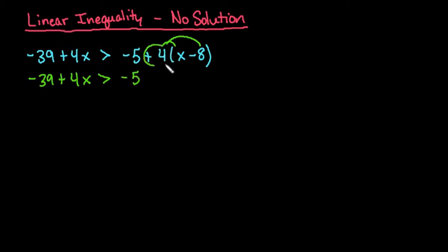So we would just distribute this positive four into the x and the negative eight. Make sure that if this was negative that you watch signs. Be very careful about that. So we would have positive four x and then positive four times negative eight gives us negative thirty-two.